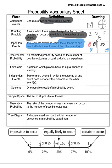Experimental probability, that could be like if you flip a coin. If you flip a coin, let's say ten times, and you get seven heads and three tails.